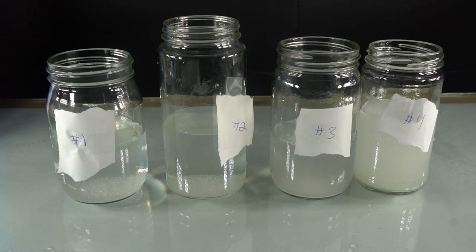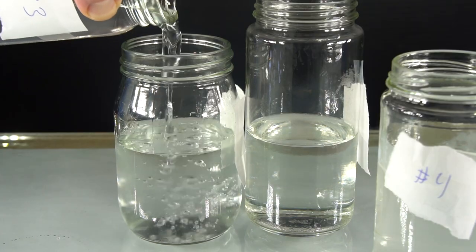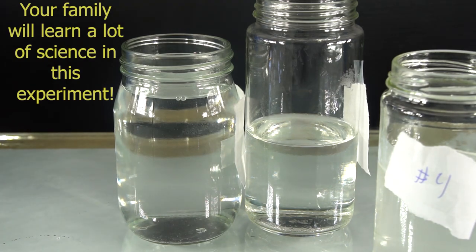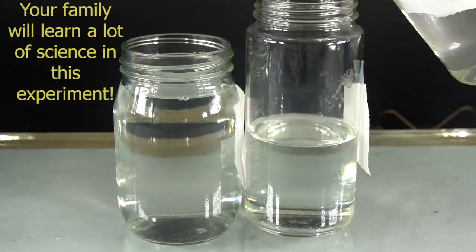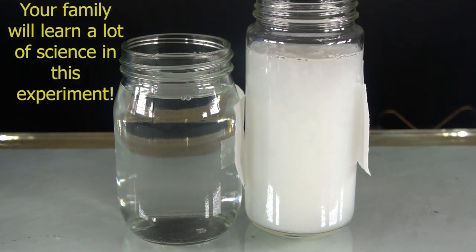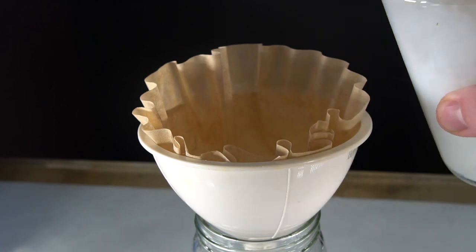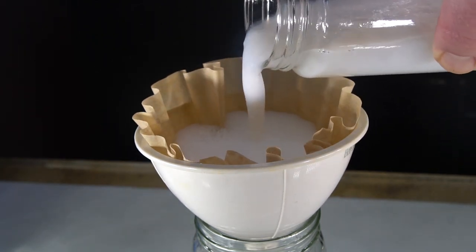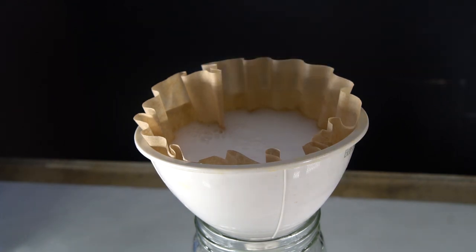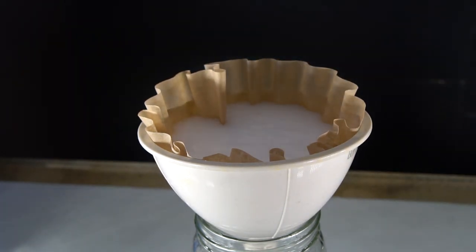In this experiment, kids and parents alike will learn about three types of reactions: decomposition reactions, double displacement reactions, and precipitation reactions. They will learn about solubility and form a beautiful white precipitate before their very own eyes. After performing this experiment, my five-year-old daughter was comfortable talking about which substances around the house were soluble and which were insoluble.